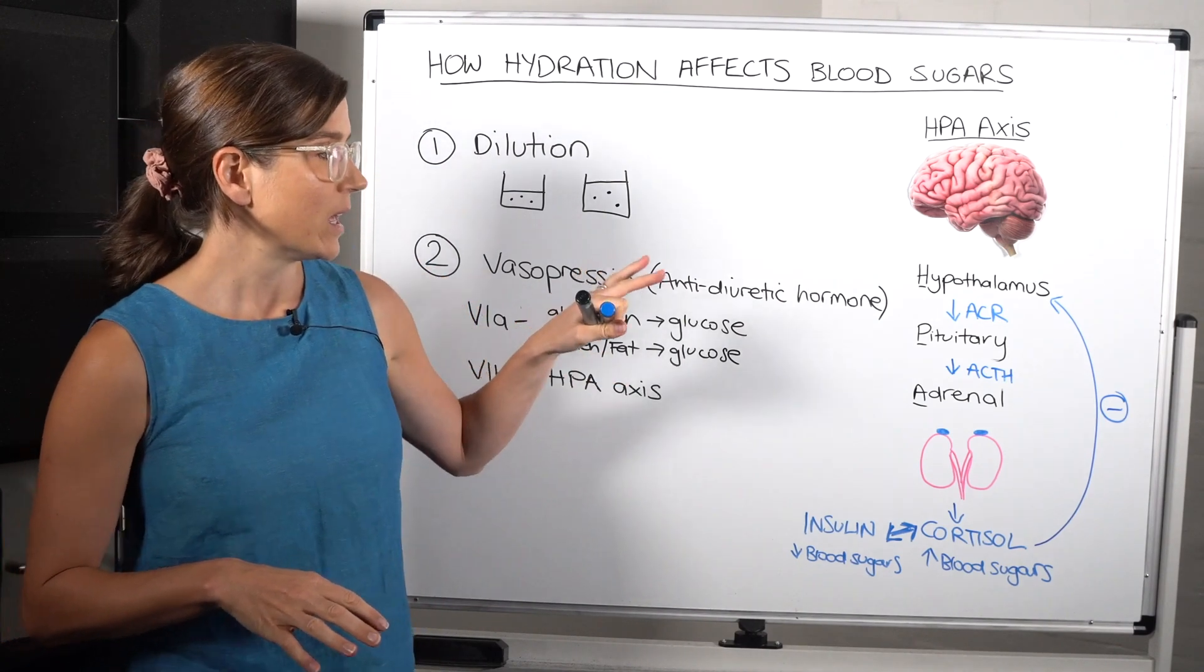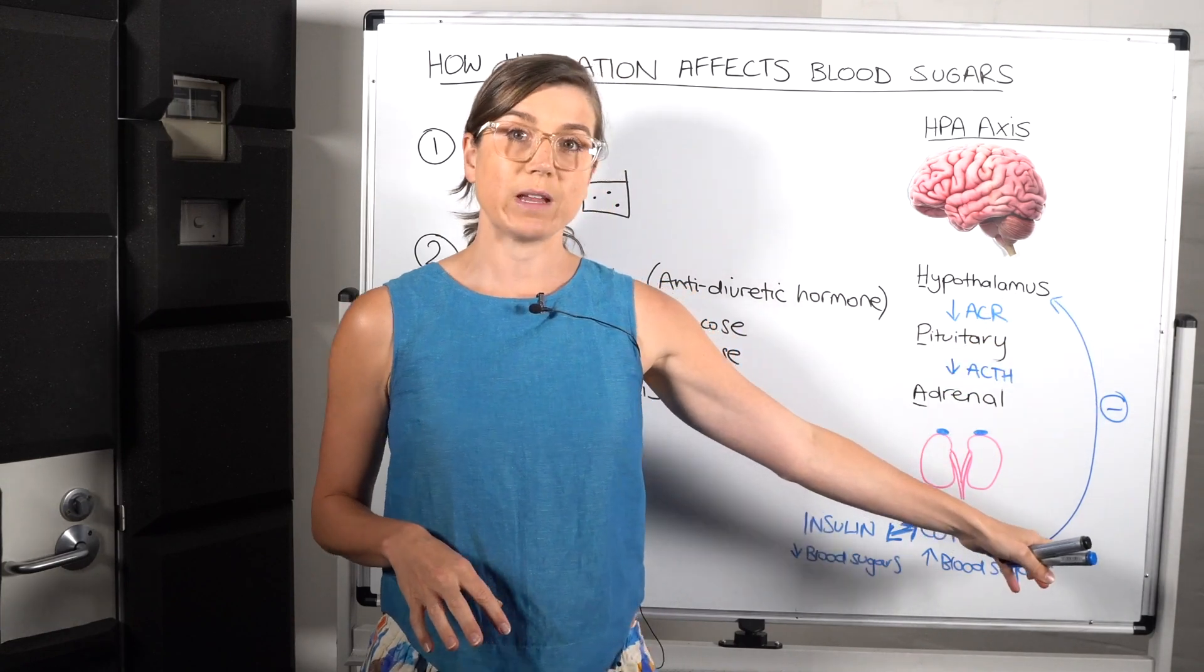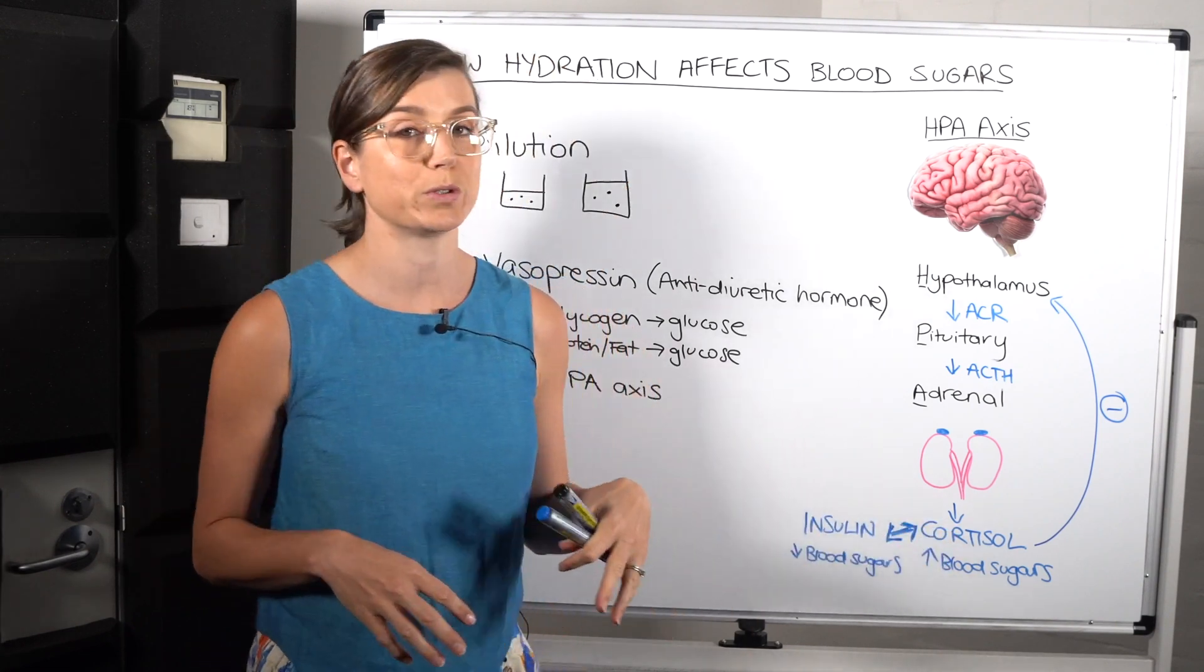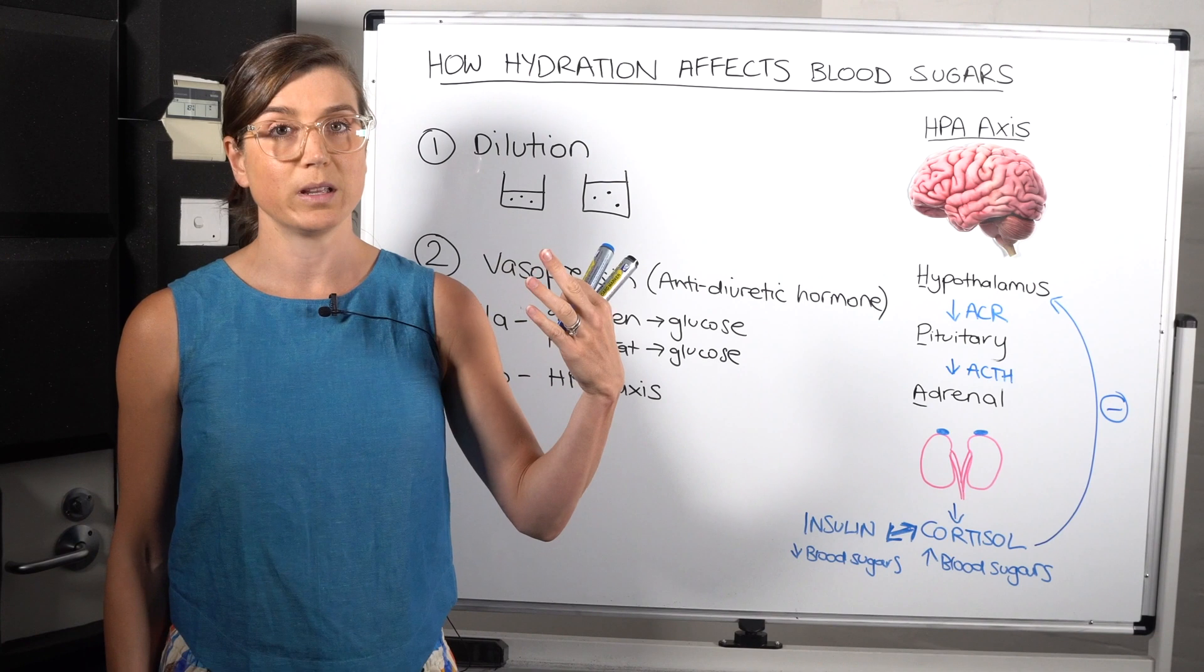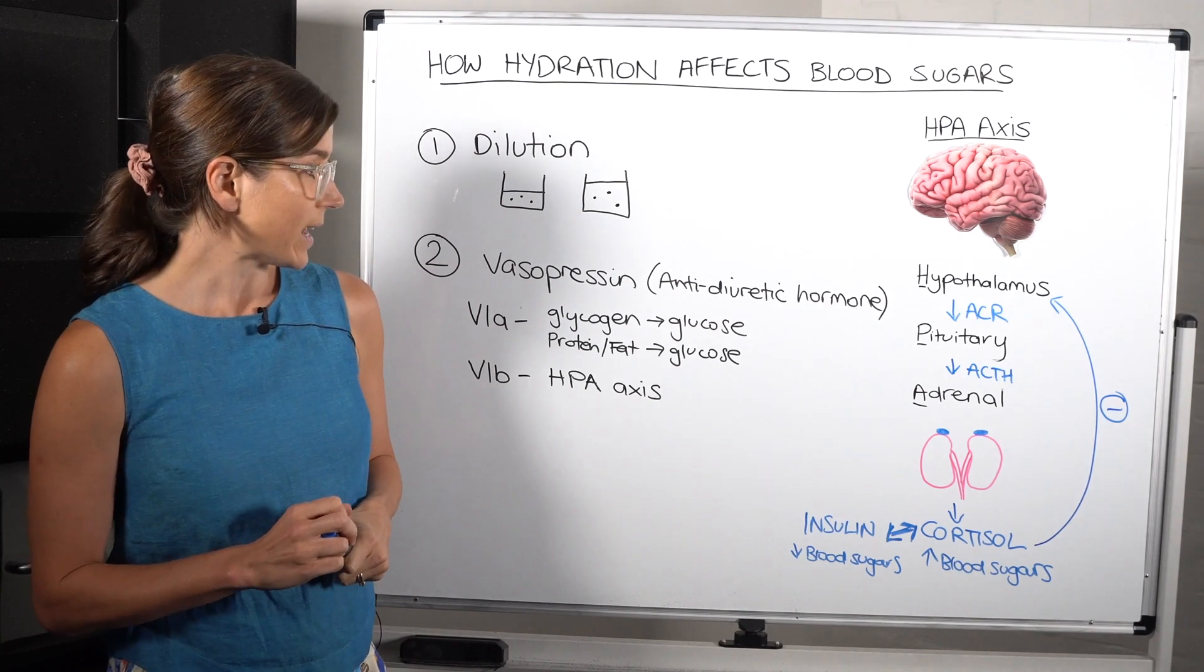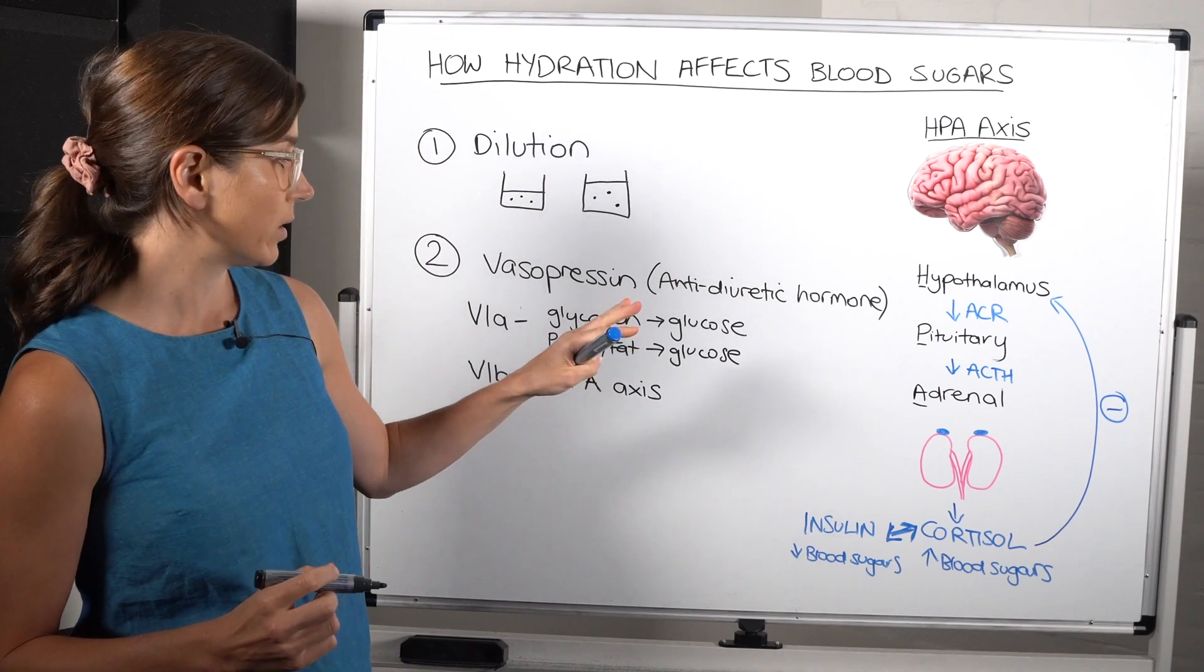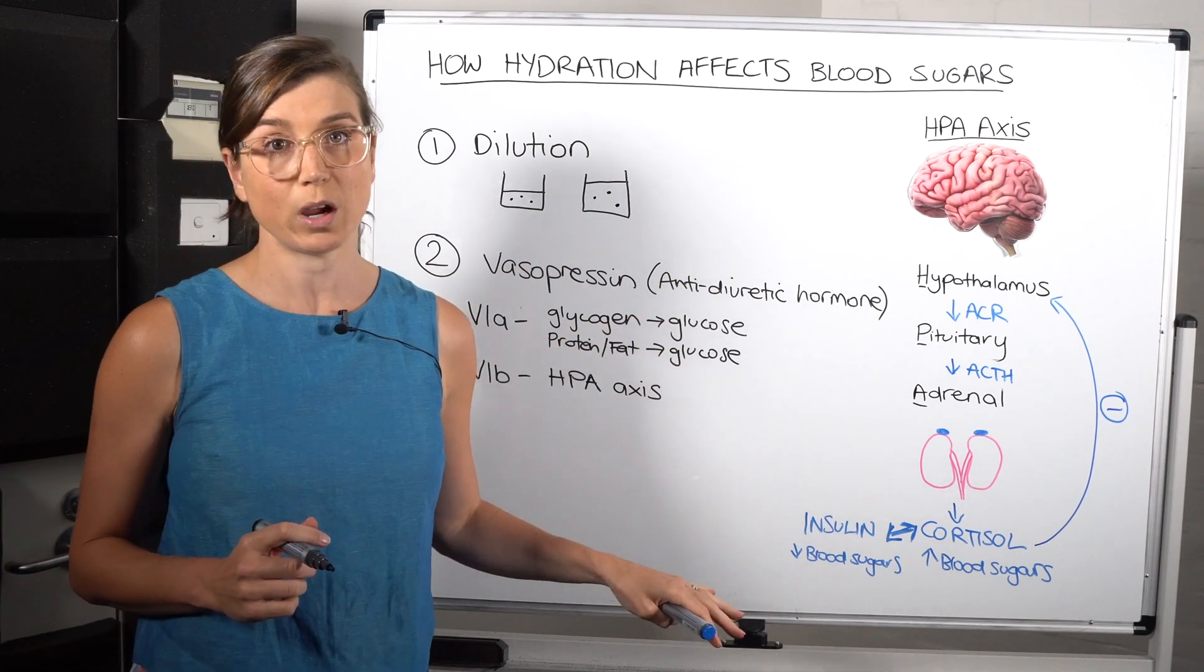Now, vasopressin actually over-stimulates the HPA axis. And it causes a little bit of resistance to this negative feedback loop, so that the message doesn't quite get across as strongly. So the HPA axis is over-stimulated, which means there's more cortisol than potentially necessary, which means that there's going to be a little bit more of this insulin resistance, or a little bit, your blood sugars are going to be elevated for slightly longer. So that is really a relatively recent finding and understanding of what's going on. It does get a little bit more complicated. But that is how the V1B receptor, when it's stimulated by vasopressin, how that can also contribute to elevated blood sugar levels.